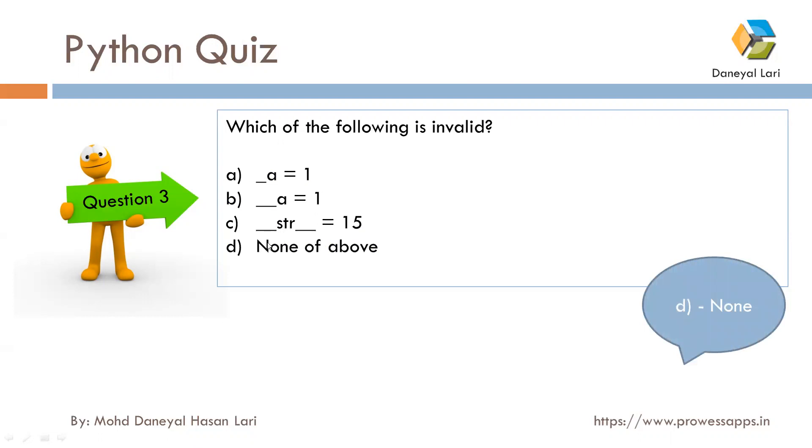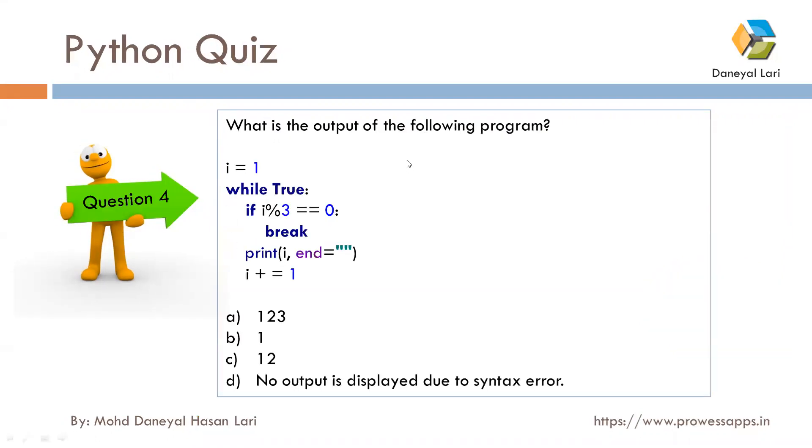Next question was: what is the output of the following program? As you can see, i equals 1, and while true, if i mod 3 double equals 0 then it will break, otherwise it will print i. But here you can see I have written the syntax i plus equals 1. I have already explained that when you write this kind of syntax, space should not be here. This will raise error, so no output is displayed due to syntactical error. The correct answer is D.